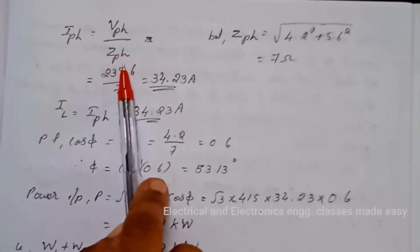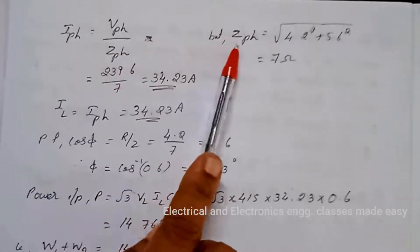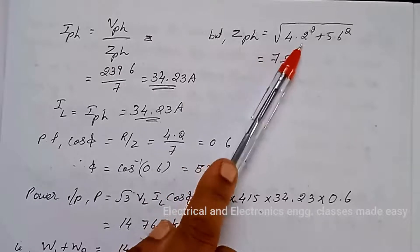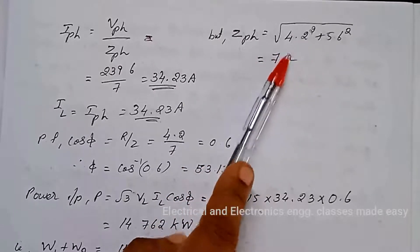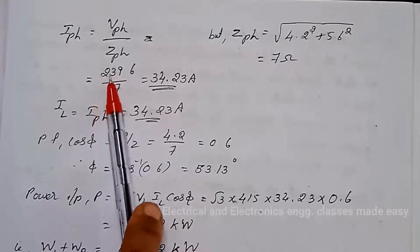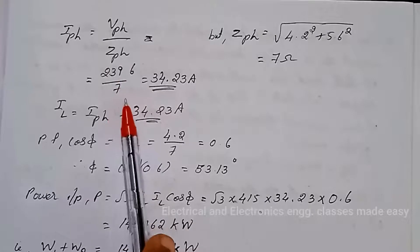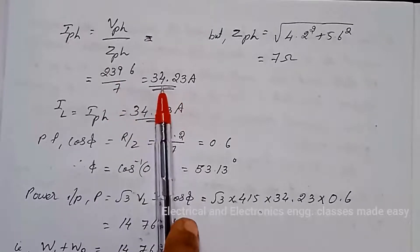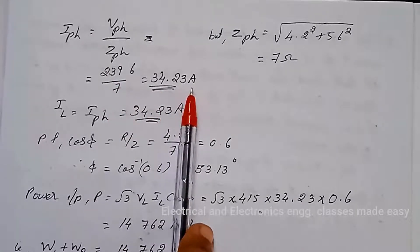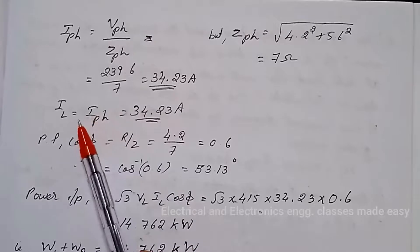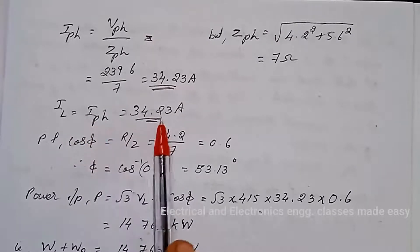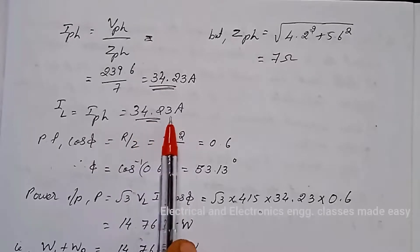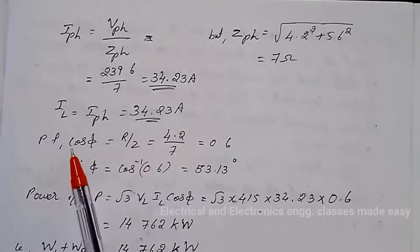Now we calculate I_phase = V_phase / Z_phase, where Z_phase = √(R² + XL²) = 7 ohm. So I_phase = 239.6 / 7 = 34.23 ampere. Since it is star-connected, the line current equals the phase current, so I_line = 34.23 ampere.